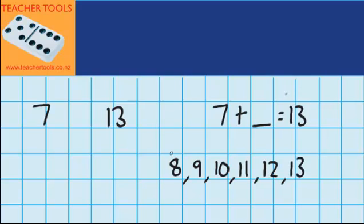So that is 1, 2, 3, 4, 5, 6 numbers. So 7 plus 6 equals 13.